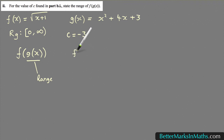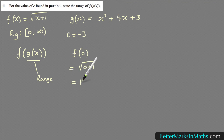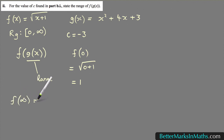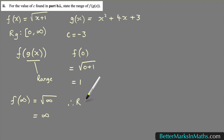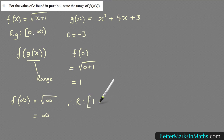Substituting into f(x) equals square root of x plus 1: f(0) equals the square root of 0 plus 1, which equals the square root of 1, which equals 1. And f(∞) equals the square root of infinity plus 1, which is still infinity. Therefore the range of f(g(x)) is from 1 inclusive up to positive infinity. That is the correct answer for part 2 of part b.